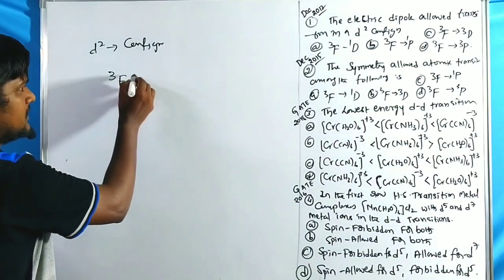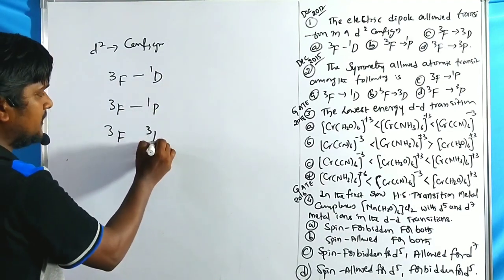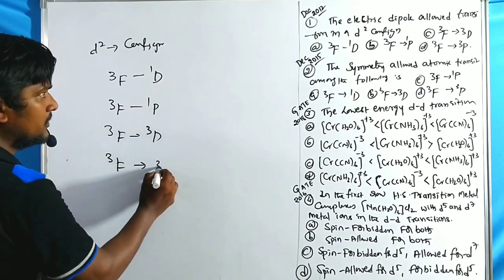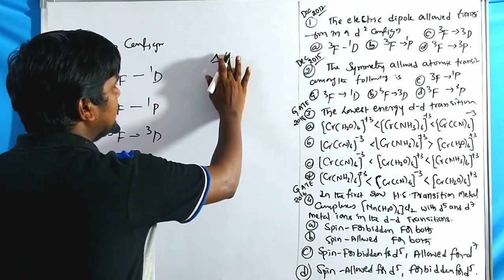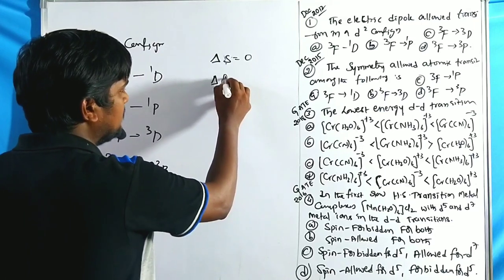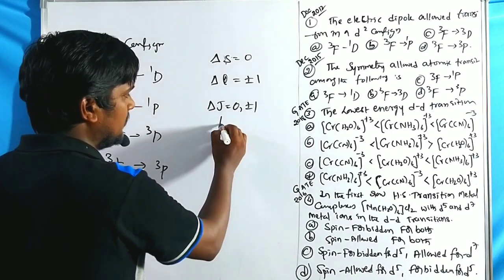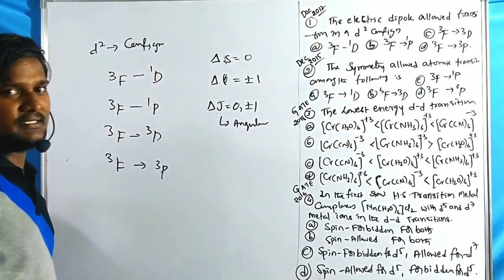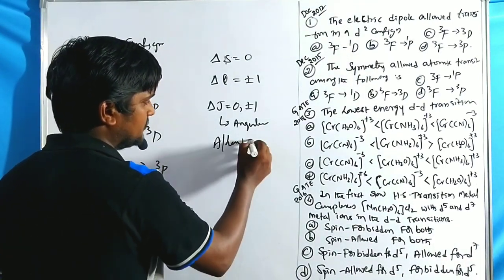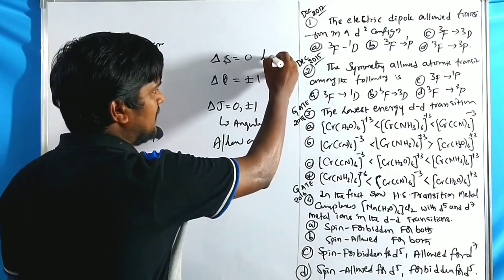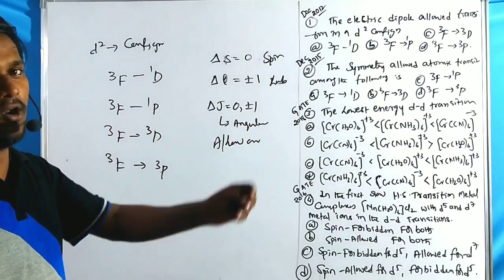The four transitions given are: ¹D → ³F, ¹P → ³F, ³D → ³F, and ³D → ³P. The selection rules are: ΔS = 0 for spin-allowed, ΔL = ±1 for Laporte-allowed, and ΔJ = 0 or ±1 for angular momentum allowed transitions. All other transitions are forbidden.